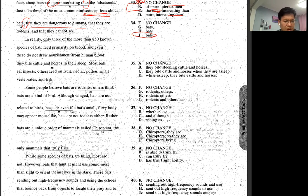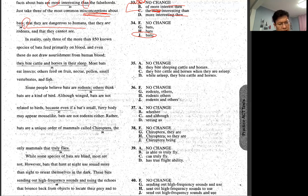In reality, only three of the more than 850 known species of bats feed primarily on blood. And even these do not throw nourishment from human blood. Okay. And then they bite cattle and horses in their sleep. They bite. And they bite. Sounds weird. In their sleep they bite, that doesn't make sense. Do they bite cattle and horses? Sleeping cattle in Mississippi would be better.